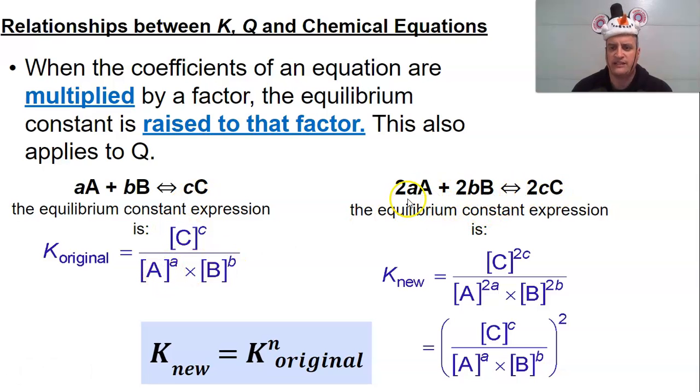Then, if we multiplied everything times 2, that means everything would be squared, which means we can square the whole thing, because again, twice, twice, twice, which is where the squared comes from. So it's taken to the nth degree.